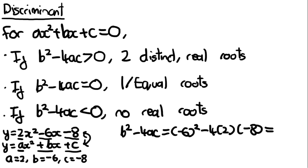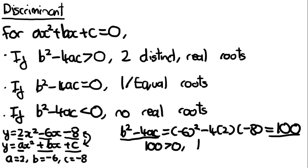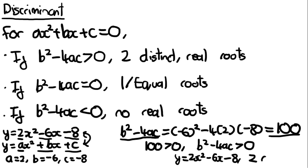We can then find b squared minus 4ac: that's minus 6 squared, minus 4 times 2 times minus 8, which equals 100. Since 100 is bigger than 0, b squared minus 4ac is greater than 0 for y equals 2x squared minus 6x minus 8, so this quadratic has two roots.